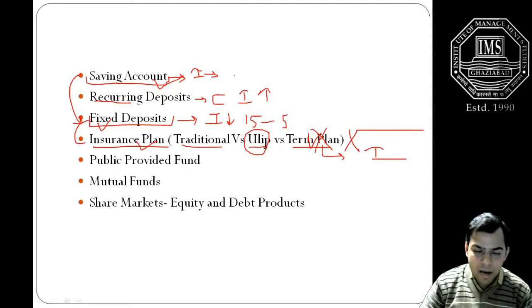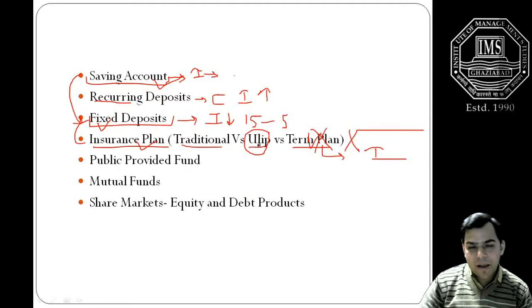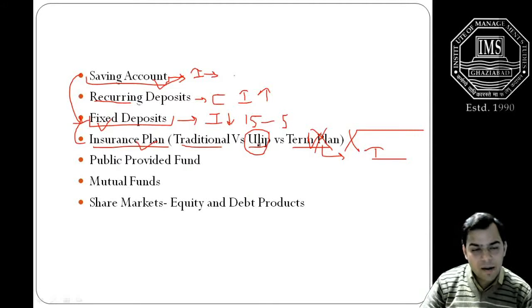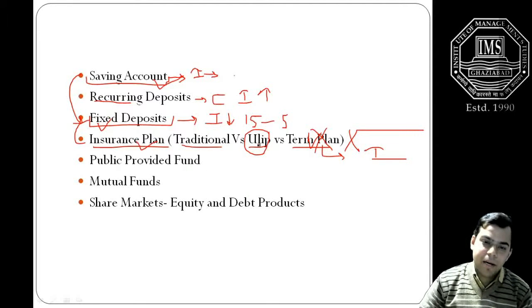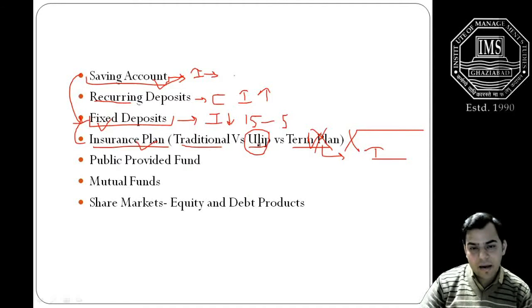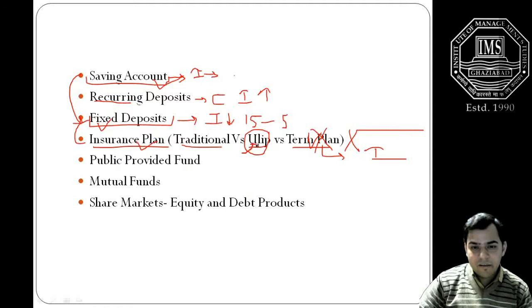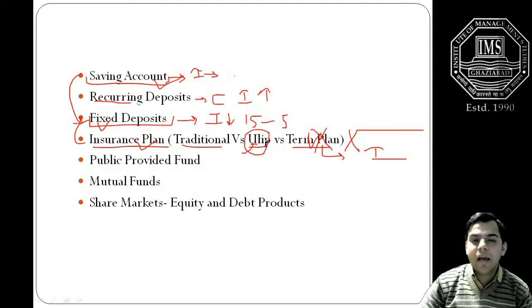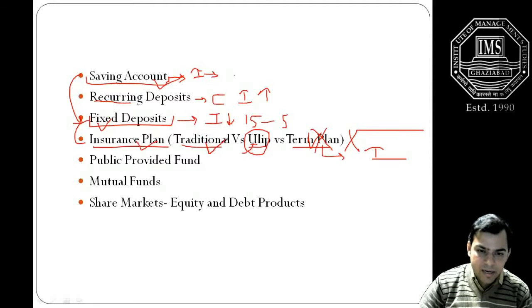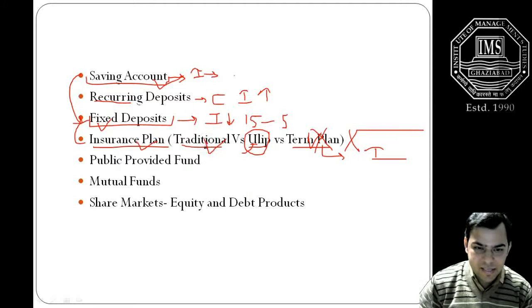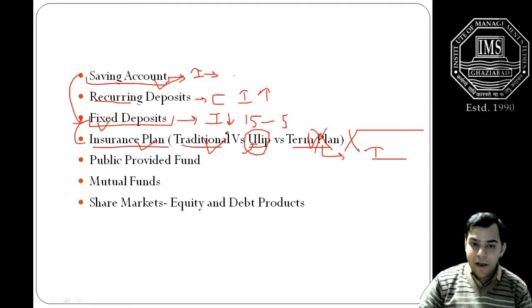ULIPs are actually the plans where the premium amount which has been taken from you will be deposited and will be going to the equity markets. ULIPs are primarily not being sold well by the insurance company, but nowadays it is again picking up as the advisors are clearly stating to the potential investor that the money which is going to be collected will be going to the stock markets.